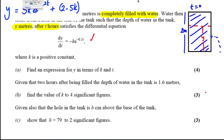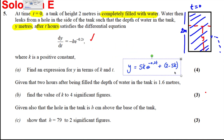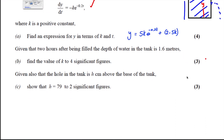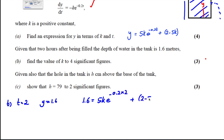Here's our equation from part (a). For part (b), we're told that two hours after being filled, the depth of the water is 1.6 meters — so when T = 2, y = 1.6. We need to find the value of k to four significant figures. Substituting in: 1.6 = 5k·e^(-0.2 × 2) + 2 - 5k, giving 1.6 = 5k·e^(-0.4) + 2 - 5k.